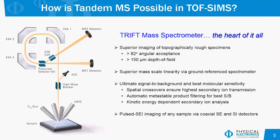Lastly, with the TRIFT mass spectrometer, because the secondary electron detector is part of the mass spectrometer, we have a secondary electron detector as well as the secondary ion detector together. Because those are collinear, we can collect pulsed secondary electron images, which is quite an advantage on an insulating sample.